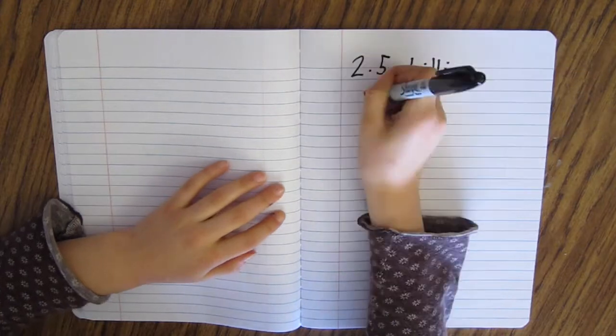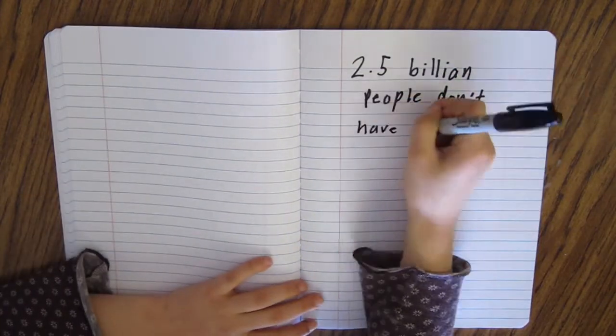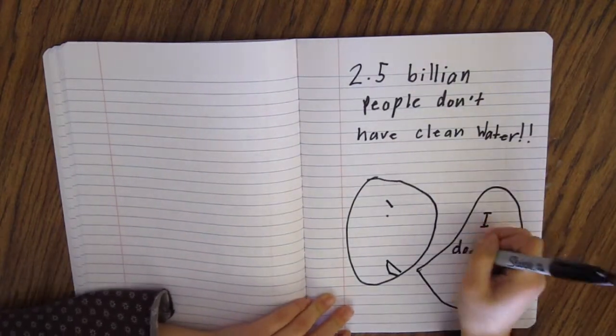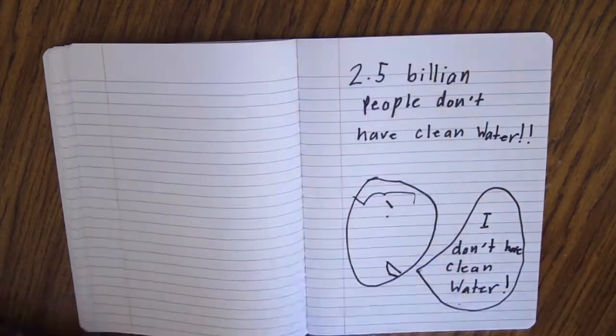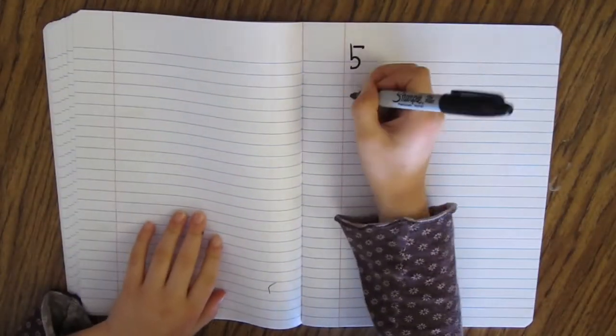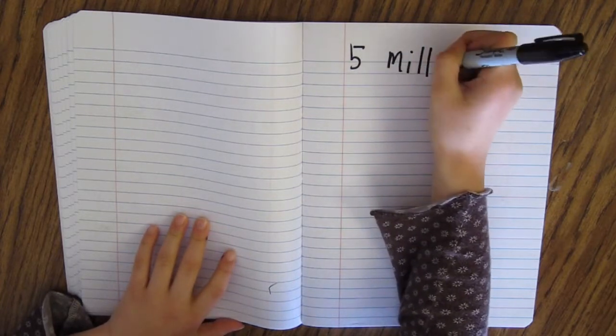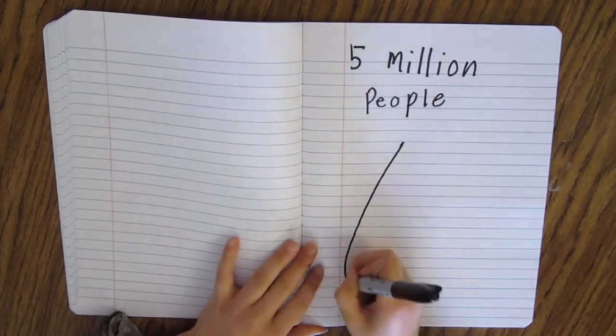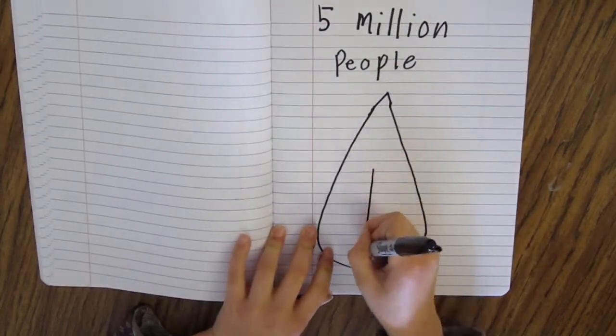Because safe water is scarce, 2.5 billion people around the world do not have access to clean water and a toilet. Because not everyone has access to clean water, each year, 5 million people, mostly children under 5, die from water-related illness.